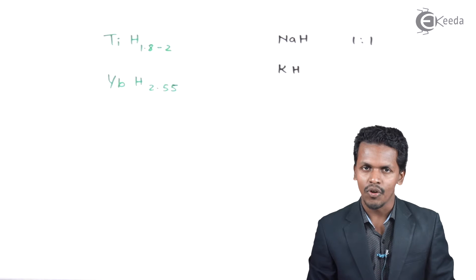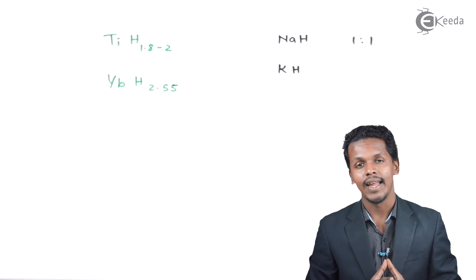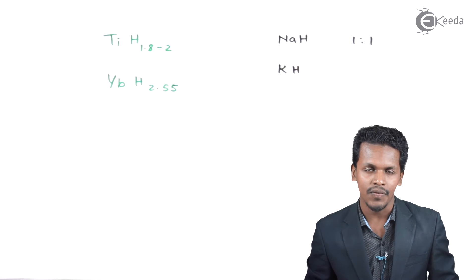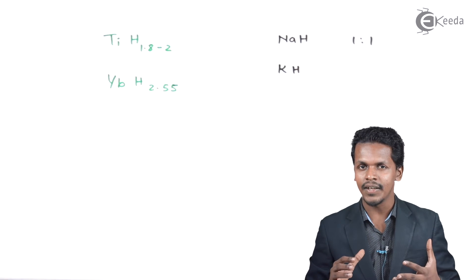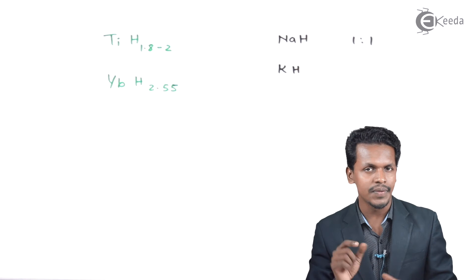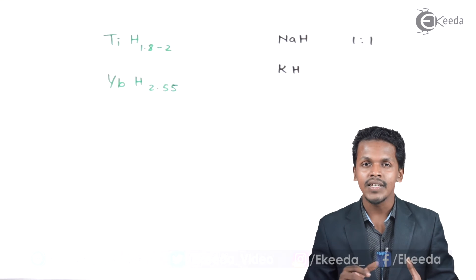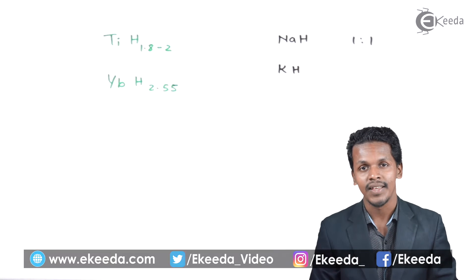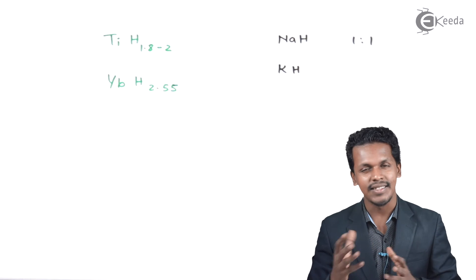How are these non-stoichiometric hydrides formed? D-block elements are very heavy metals and they form crystal-like structures. The lattices of these D-block elements are very precise. When forming these hydrides, hydrogen, having a smaller atomic size, occupies the interstitial spaces within the crystal lattice of metals like titanium and ytterbium. This is why the combination of hydrogen and these metals forms metal hydrides that are not in perfect stoichiometric proportions.